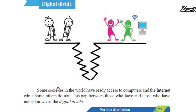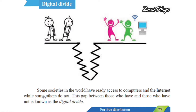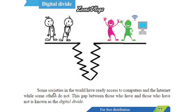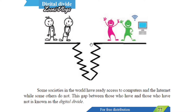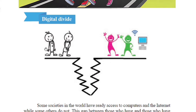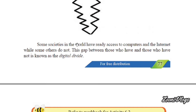Some societies in the world have ready access to computers and the internet, while others do not. This gap between those who have and those who do not have is known as the digital divide. Some people know about digital devices while in other parts they don't know anything about digital devices — so there is a huge gap between them.